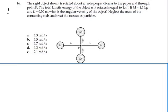Here's problem 1014. The rigid body shown is rotated about an axis perpendicular to the paper and through point P. The total kinetic energy of the object as it rotates is equal to 1.4 joules. If M is 1.3 kg and L is 0.5 meters, what is the angular velocity of the object?